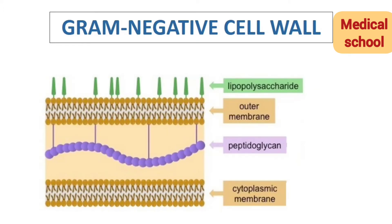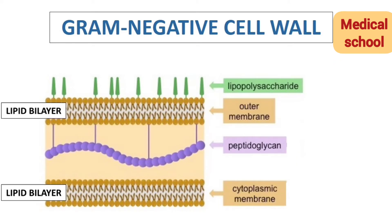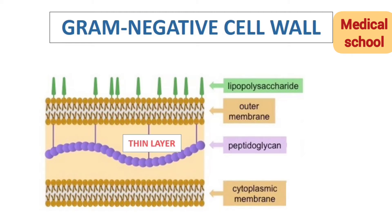In gram negative cell wall, LPS — that is lipopolysaccharide — hota hai, aur ek outer membrane, aur thin layer of peptidoglycan and cytoplasmic membrane. If you compare, peptidoglycan in gram positive wall is 10 times thicker than negative. Aur isi farak ke bajah se hi staining mein difference aajata hai.